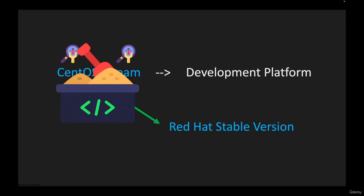Throughout this course, I'm going to use CentOS Stream 9, which is the latest version as of today. You can also use the last stable CentOS Linux, which is CentOS Linux 7. Both distributions are provided by Google Cloud. I hope this gave you a better understanding of the difference between CentOS and Red Hat. I'll see you in the next video.